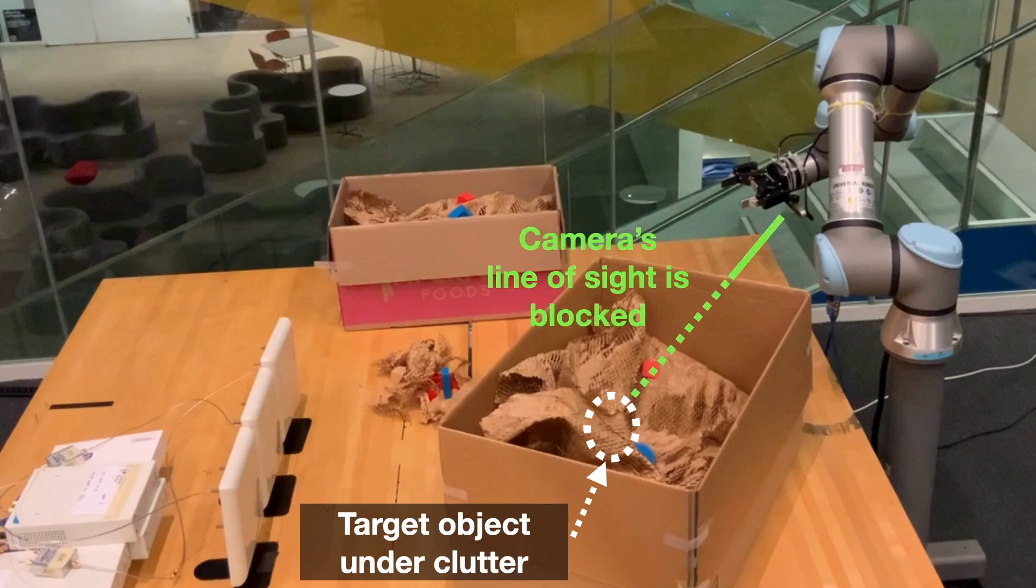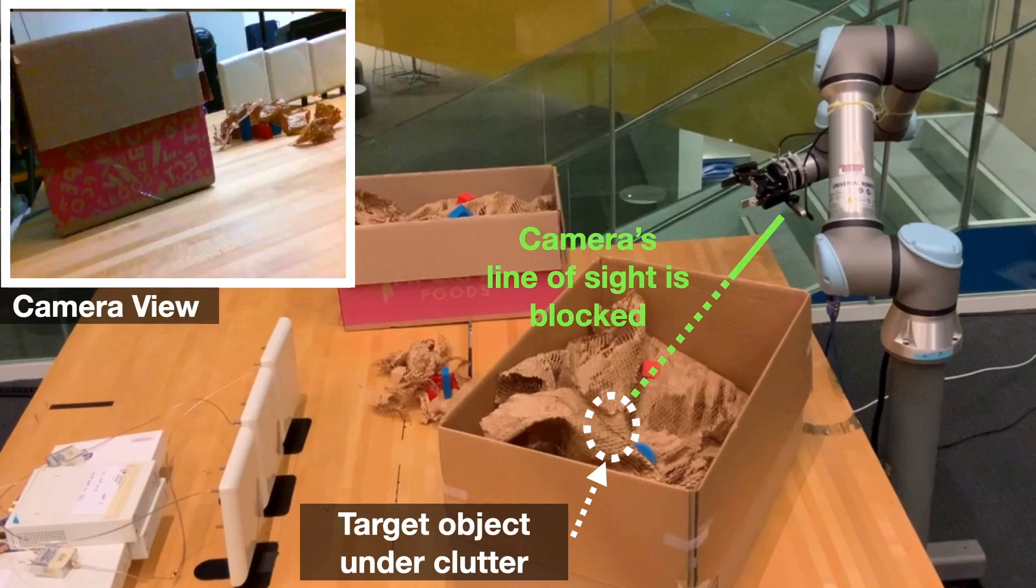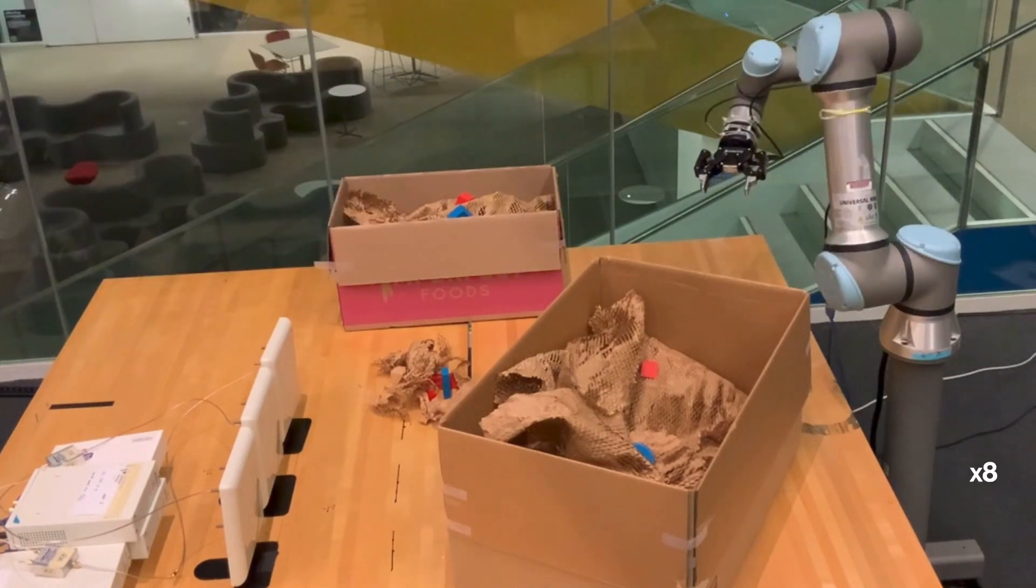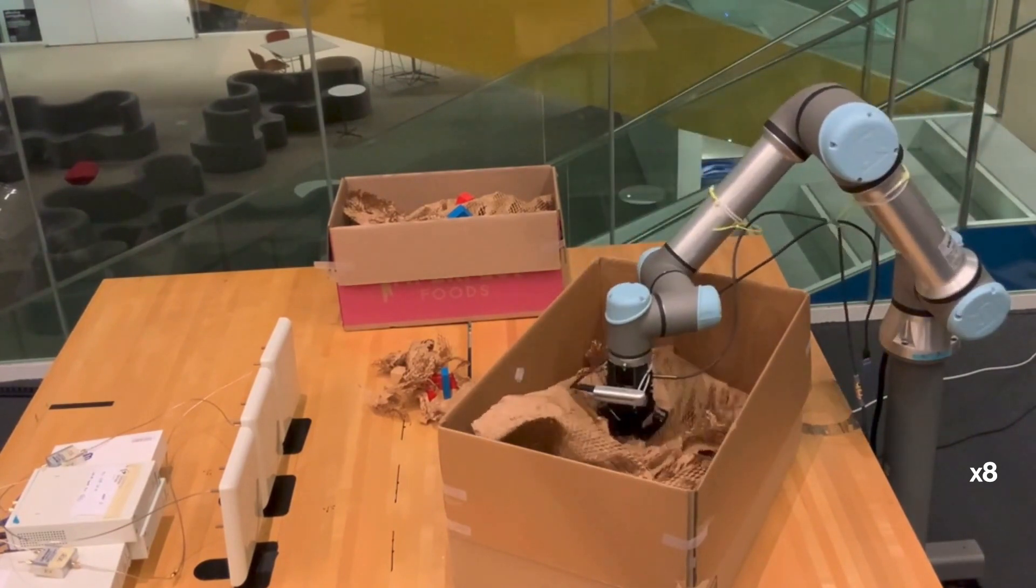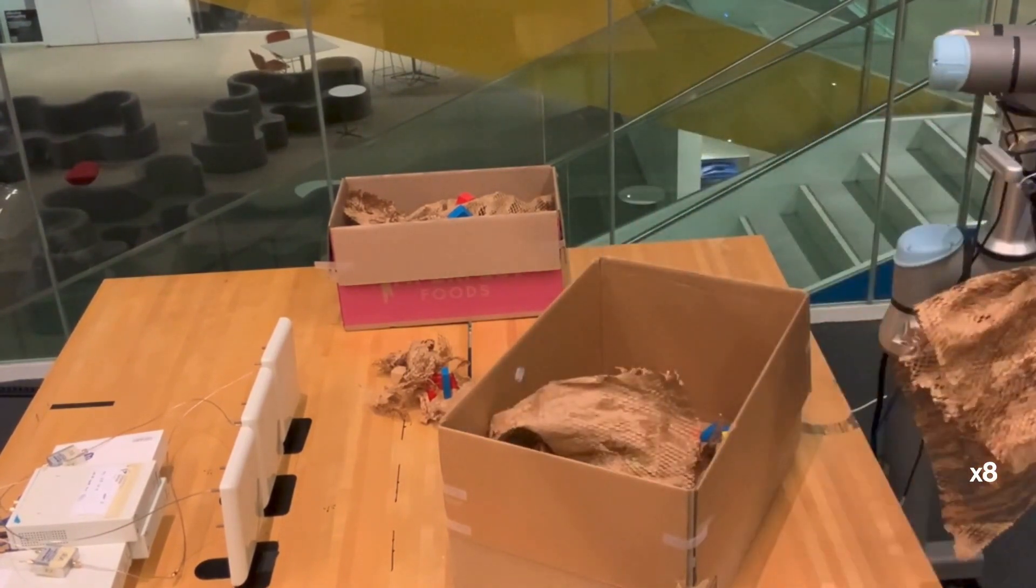As you can see, the robot's camera line of sight is blocked and the object is not in the camera's view. I will show you how our system can explore the environment to approach the object, declare its vicinity, and pick it up.